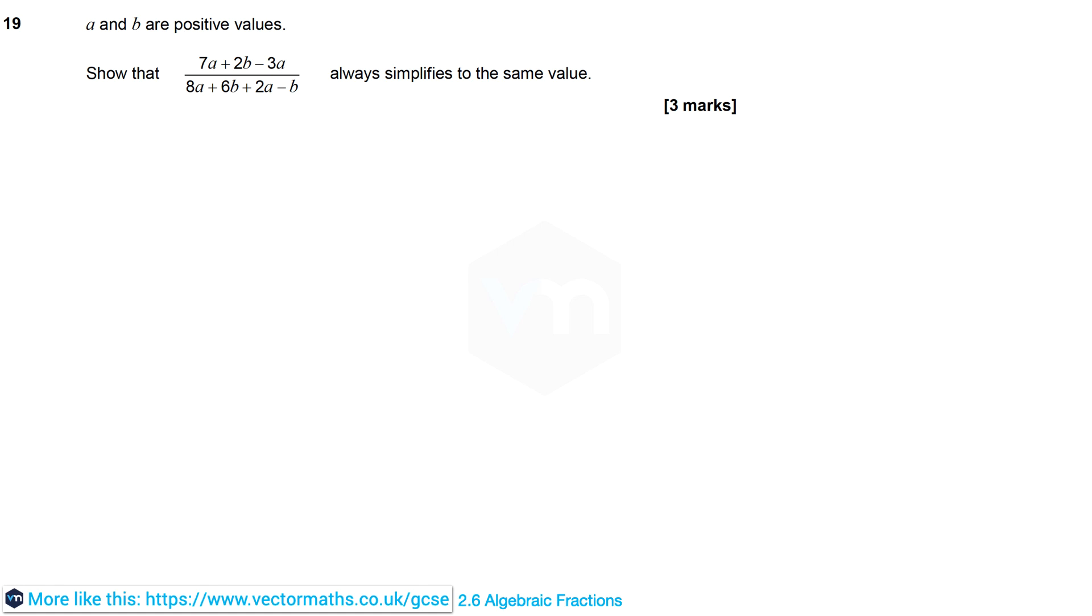In question 19 we are told that a and b are positive values and we need to simplify the algebraic expression.